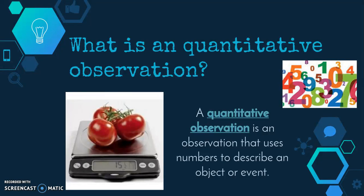Quantitative observations are going to be any observation that uses numbers to help describe whatever it is you're observing. You might be observing the number of leaves on the tomatoes or the number of tomatoes in the space provided. Those both have numbers that you would record on a data table.